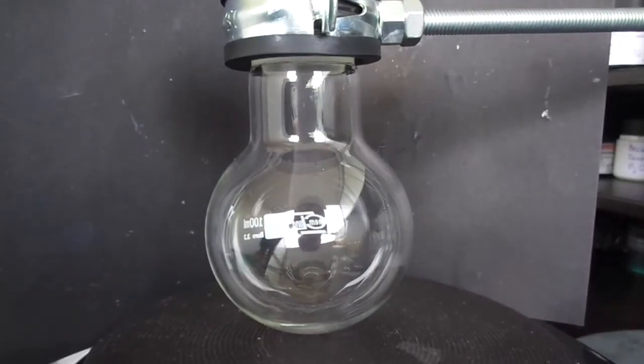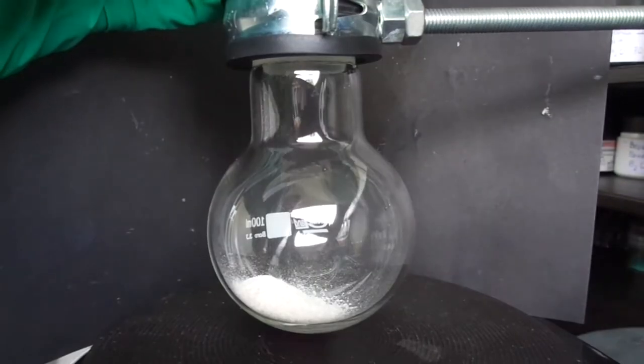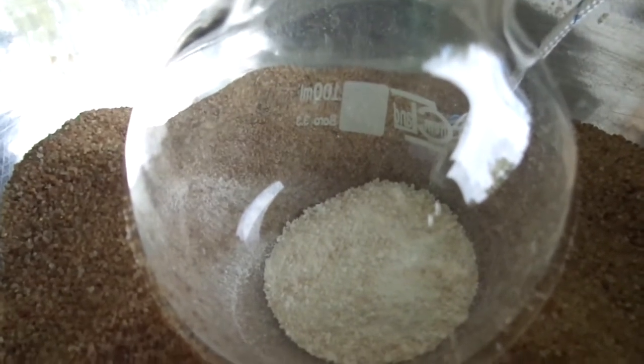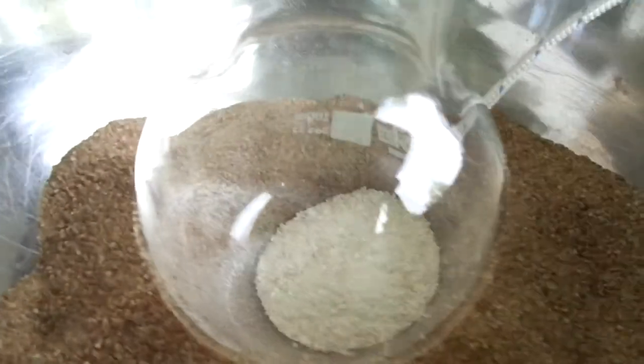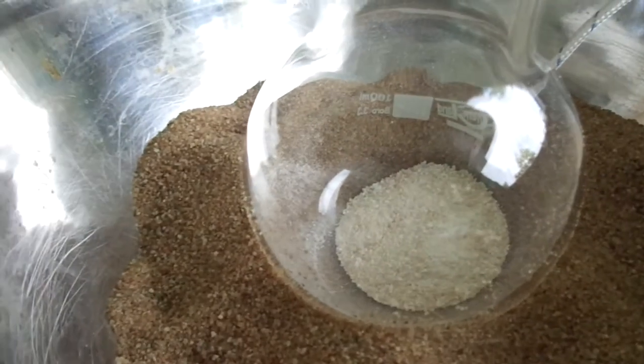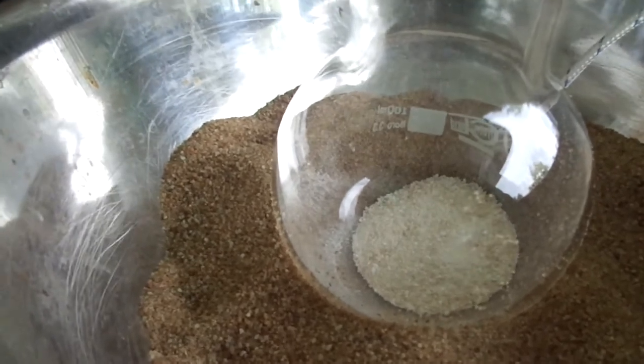So I have this round bottom flask 100 milliliters on a hot plate. As you can see, I inserted a thermometer probe here, and also I changed the clamp to a metal one. If you have an oil bath, definitely use that, because it's going to work much better.